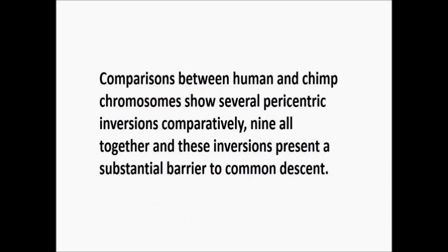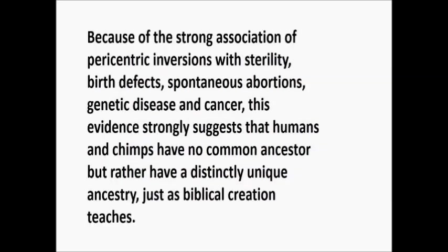In comparisons between humans and chimpanzee chromosomes, we see several paracentric inversions comparatively — nine altogether. These inversions present a substantial barrier to common descent. Because of the strong association of paracentric inversions with sterility, birth defects, spontaneous abortions, genetic disease, and cancer, this evidence strongly suggests that humans and chimps share no common ancestor, but rather have a distinctly unique ancestry, just as biblical creation teaches. Thank you.